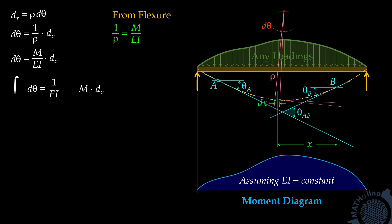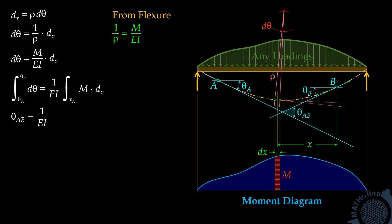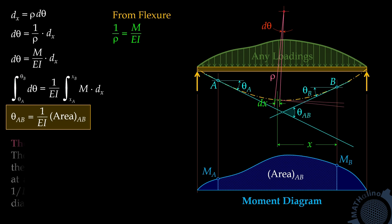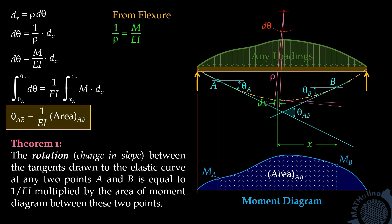Then we are going to sum up both sides of the equation. The sum of dtheta from point A to point B is the total change in slope between A and B, denoted by theta AB. If we sum up this differential area from point A to point B, we get the total area between A and B, denoted by area subscript AB. This is Theorem 1 in the area moment method: the rotation, or total change in slope, between the tangents drawn to the elastic curve at any two points A and B is equal to 1 over EI multiplied by the area of the moment diagram between these two points.